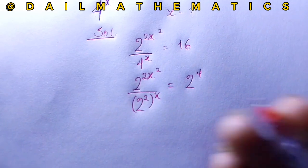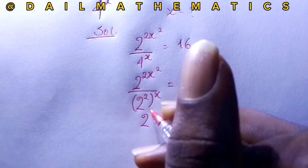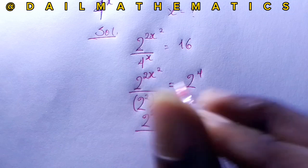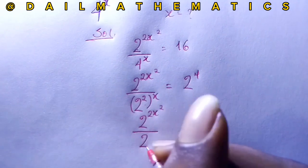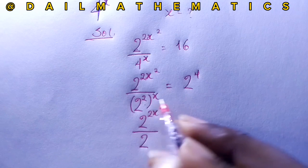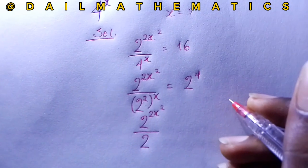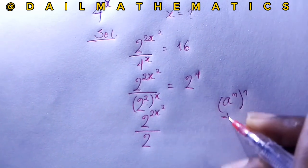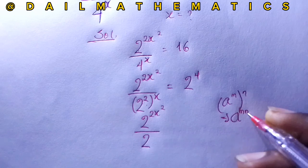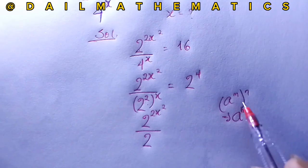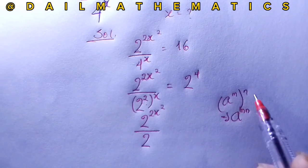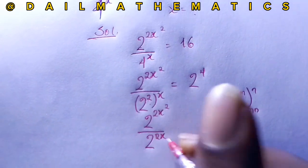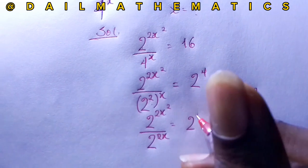We now have 2 raised to the power of 2x squared, divided by 2 raised to the power of 2 bracket x. When we have a^m raised to the power of n, it gives us a^(mn) by the laws of exponents. So 2 times x gives us 2x in the denominator's exponent.